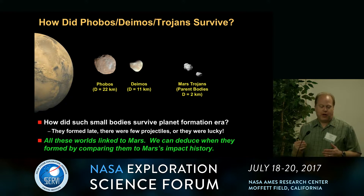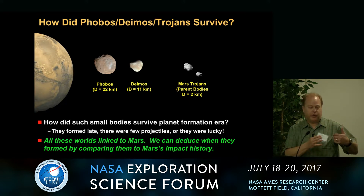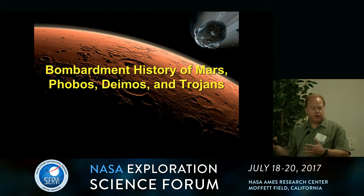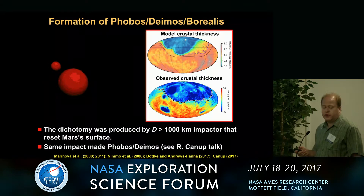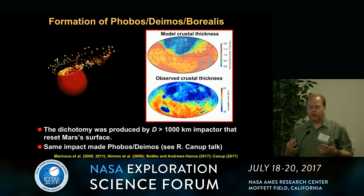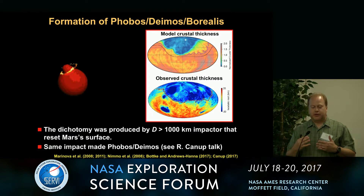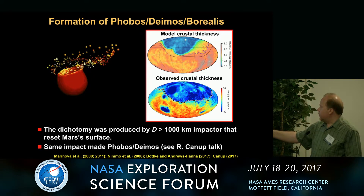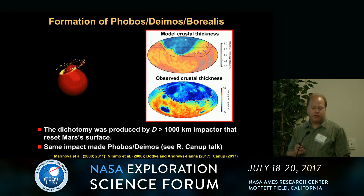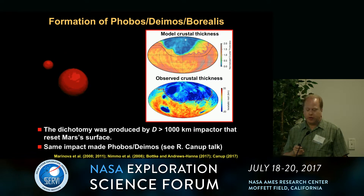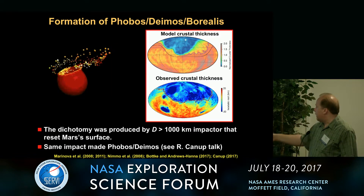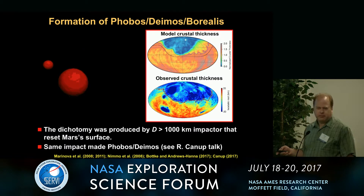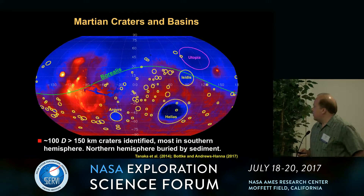I can tell you these objects are consistent with having a bombardment history of half of Mars, all of Mars, or maybe more than Mars. To tell that story I need to cover the bombardment history of Mars. The biggest feature we can see on Mars with our eyes is called the global dichotomy — a large topographic difference between the Northern Hemisphere and Southern Hemisphere of several kilometers. We think it was probably produced by a large object hitting Mars, probably on the order of at least a Ceres-size or larger, creating a large impact basin. This impact may have even created Phobos and Deimos.